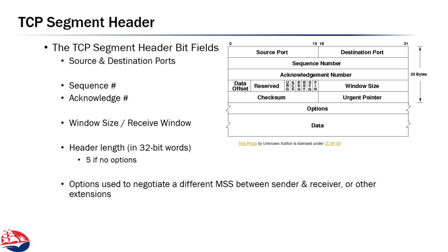The TCP segment header, like UDP, has a number of parts. It's hard to say exactly how big it will be because of the options field — options are optional and could be zero bytes or some variable number. A data offset field tells you where the data begins after the options. Like UDP, we have a source port and destination port — 16-bit integers — which provide the multiplexing capability shared by both TCP and UDP.